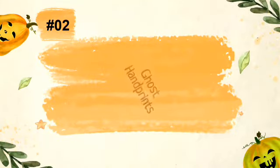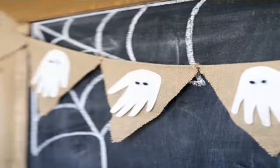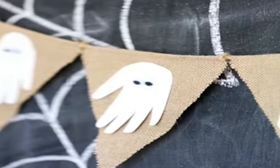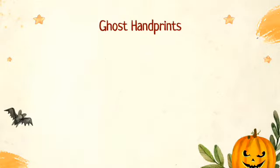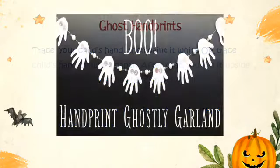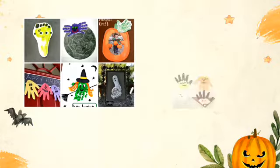The next idea is ghost handprints. Trace your child's hand then paint it white, or trace the child's hand on white paper. After that, flip it upside down so the palm is the ghost's head. Now add googly eyes and string them up around the house for decor. You can add 'boo' or other spooky words. It doubles as a memento for when those little hands get a lot bigger.